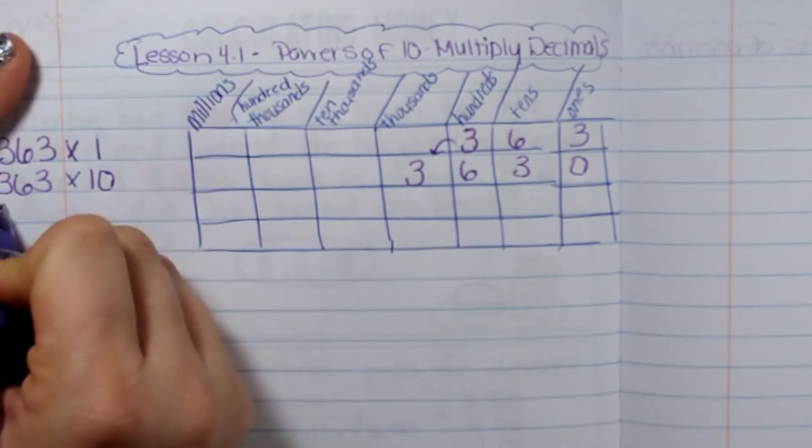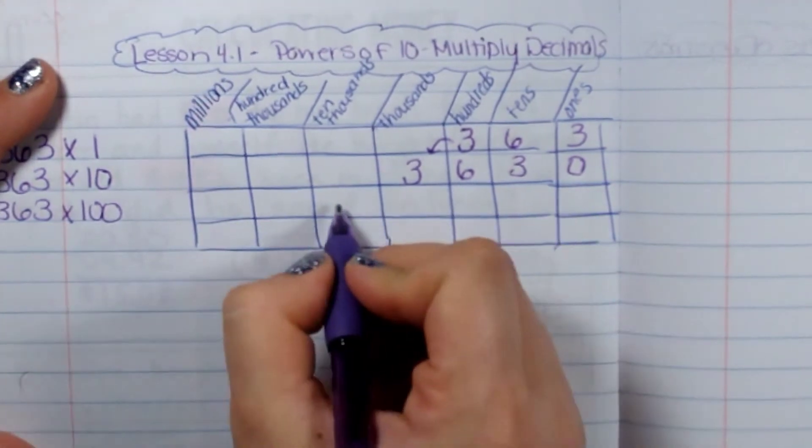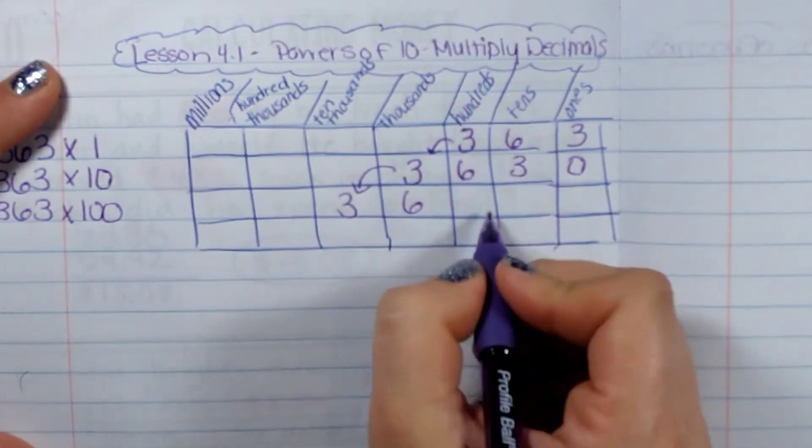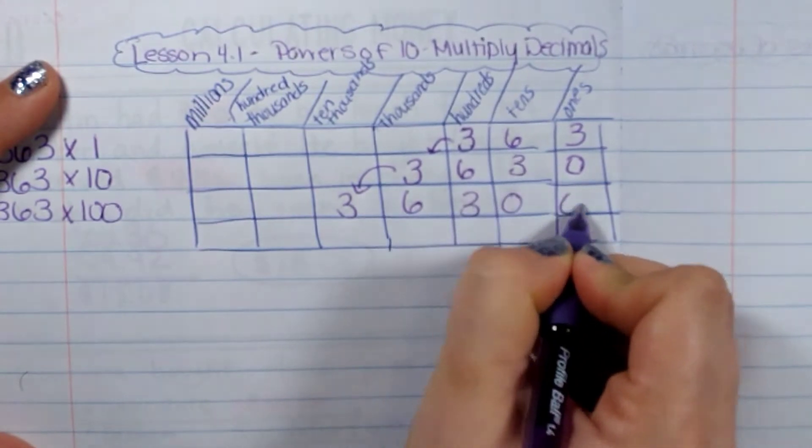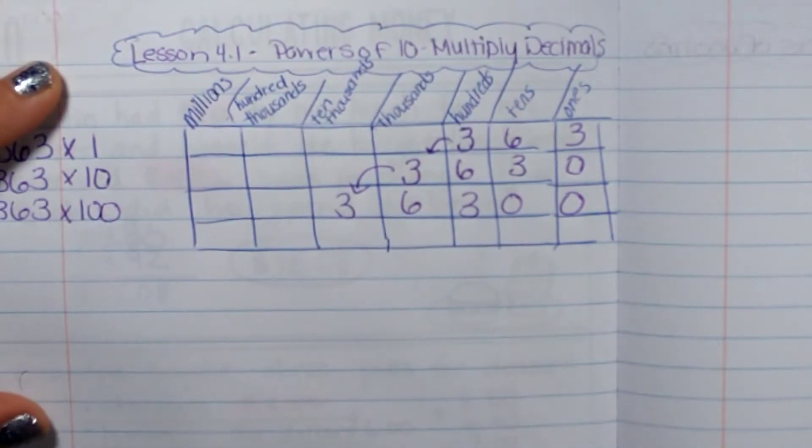If I was to do three hundred and sixty-three times one hundred or ten to the second power, I would move it over another decimal place. Because three hundred and sixty-three times one hundred is thirty-six thousand three hundred.